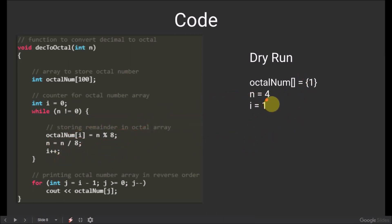As the value of n is still not equal to 0, we continue the while loop. Again, n modulus 8, that is, 4 modulus 8 will give us 4 and we store it in the octalNum array. Now, we divide 4 by 8 which gives us 0 and we increase the value of i by 1 to 2.